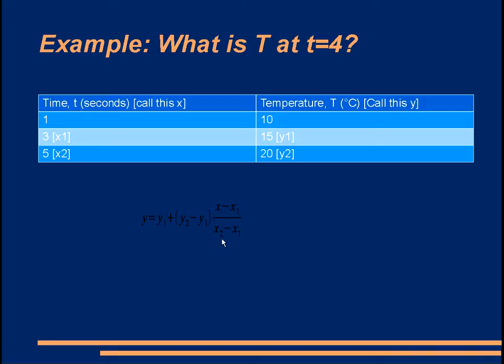This is the formula for linear interpolation. You assign one set to be 1, so you've got x1 and y1. This is our point 1. And then the point further on, we've got point 2, so this is our y2 and our x2.